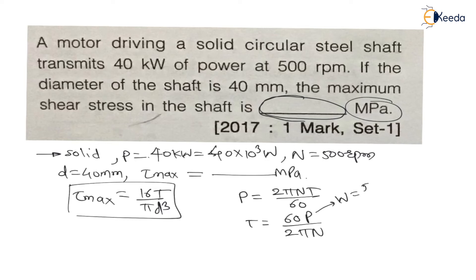But my dear students, if I use power in watt, watt is nothing but joule per second, joule is nothing but newton meter per second. Therefore if I use power in watt and rpm, then I will get torque in newton meter. And in this τmax equation, we have to put torque in newton mm, so don't forget to convert the units.